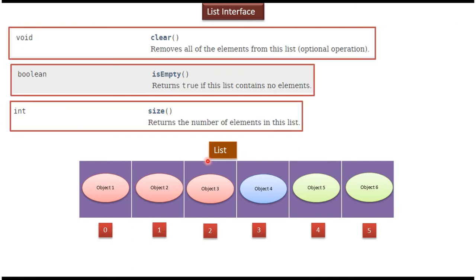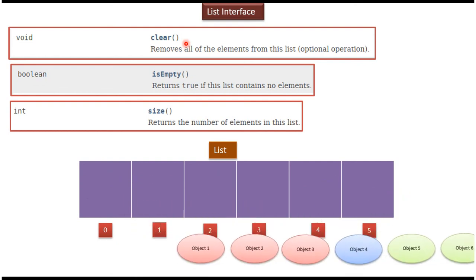Suppose I want to know whether the list is empty or not — I can use the isEmpty() method. It returns true if the list doesn't contain any elements, and false if it does. To know the size of the list, I can use the size() method. And if I want to clear all elements from the list, I use the clear() method, which removes all elements.